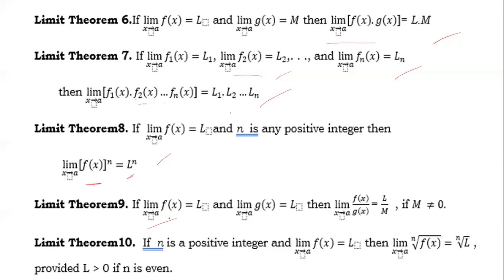Theorem nine: if the limit of f(x) as x approaches a equals L and the limit of g(x) as x approaches a equals M, this is the quotient rule. The limit of f(x) over g(x) as x approaches a equals L over M, provided that M must not be equal to zero so that the function will not be undefined.